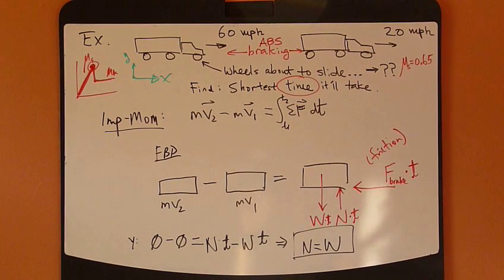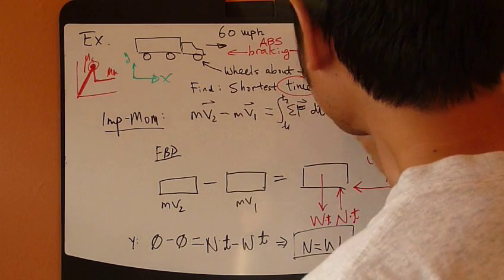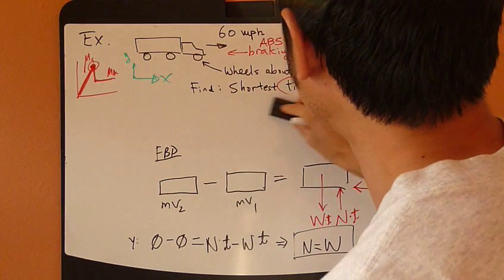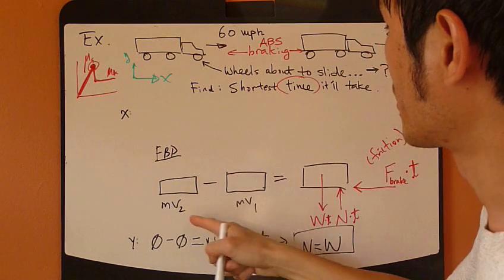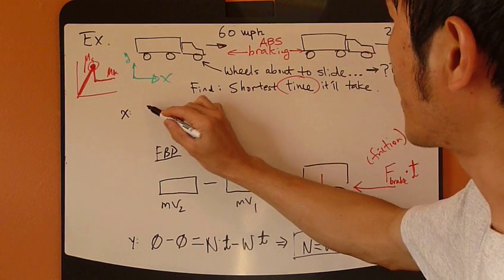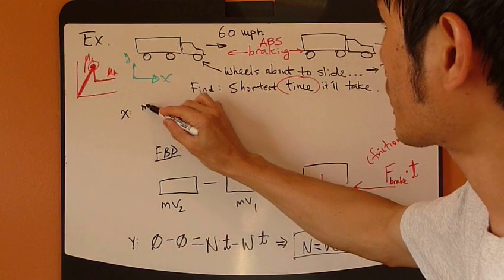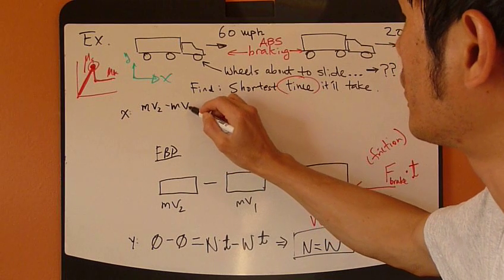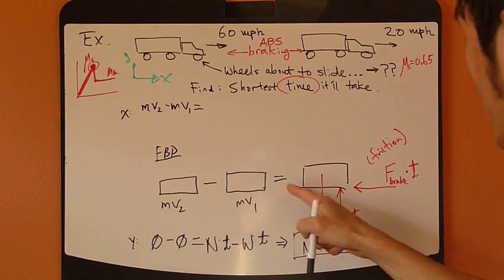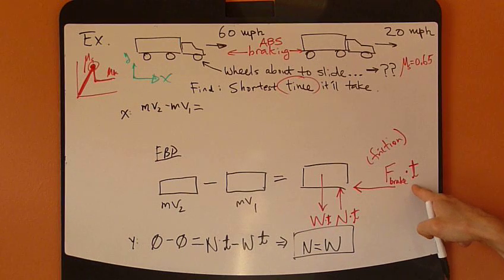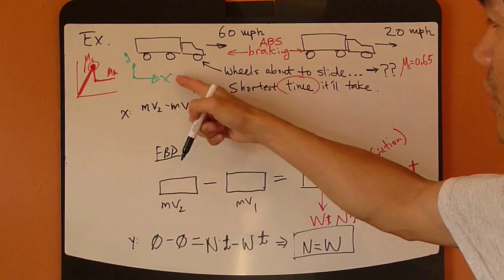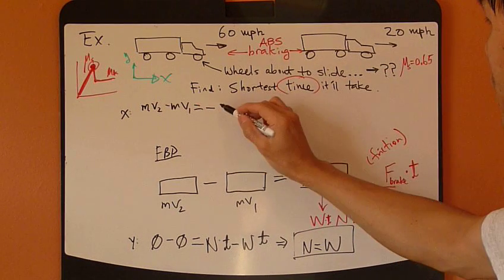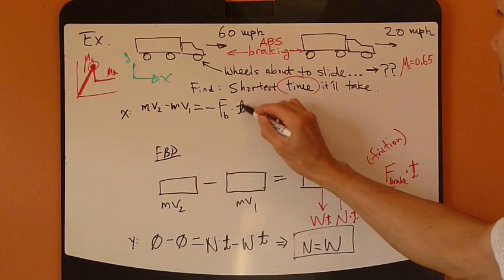Now keep going. Apply that in the X direction. So this minus that, I have mV₂ minus mV₁ equals right-hand side. This is the only term that survives in the X direction. However, this goes to the left, so this is the negative X direction. Negative of braking force times T.